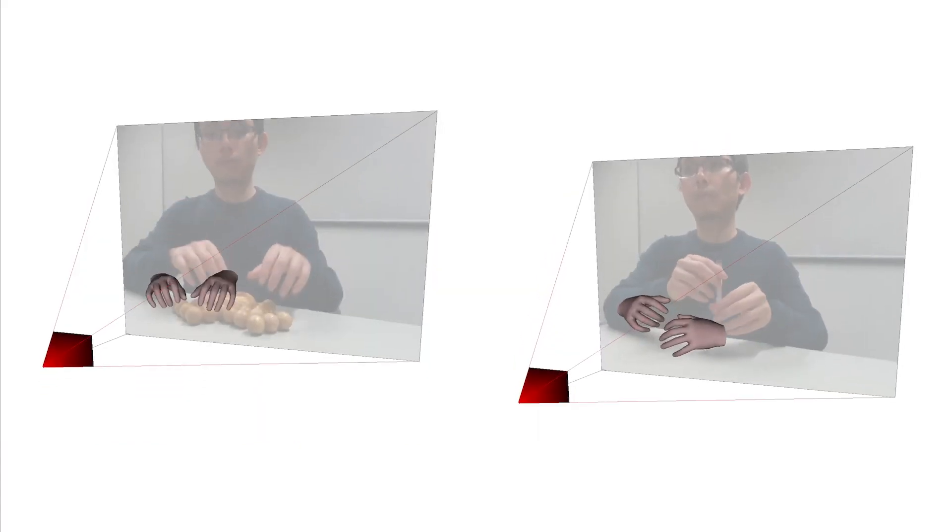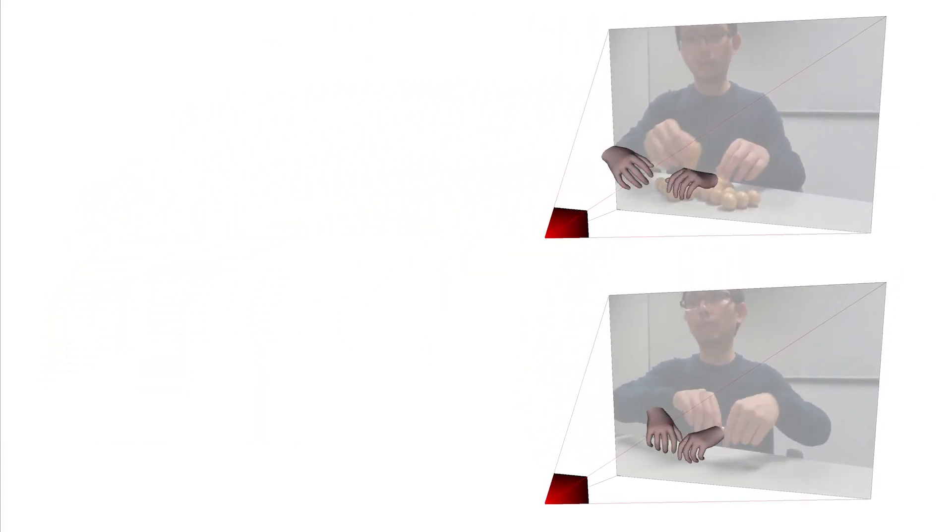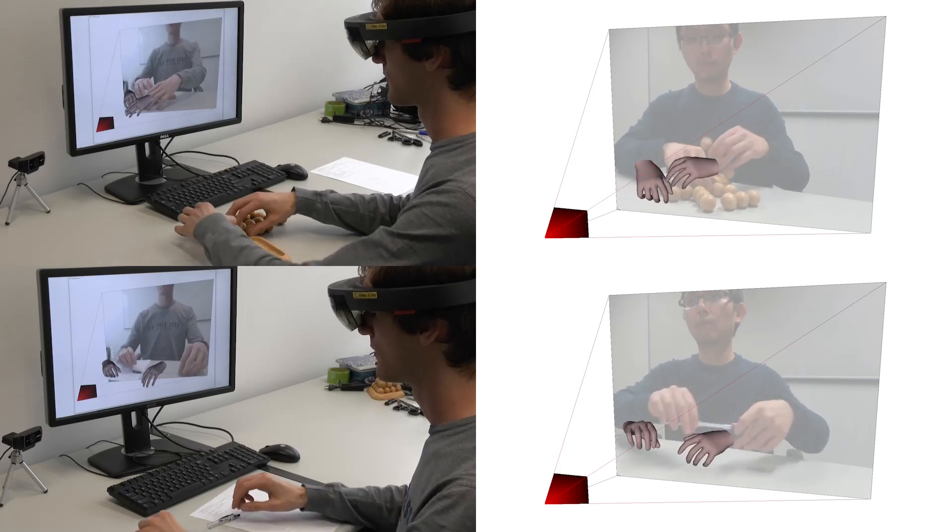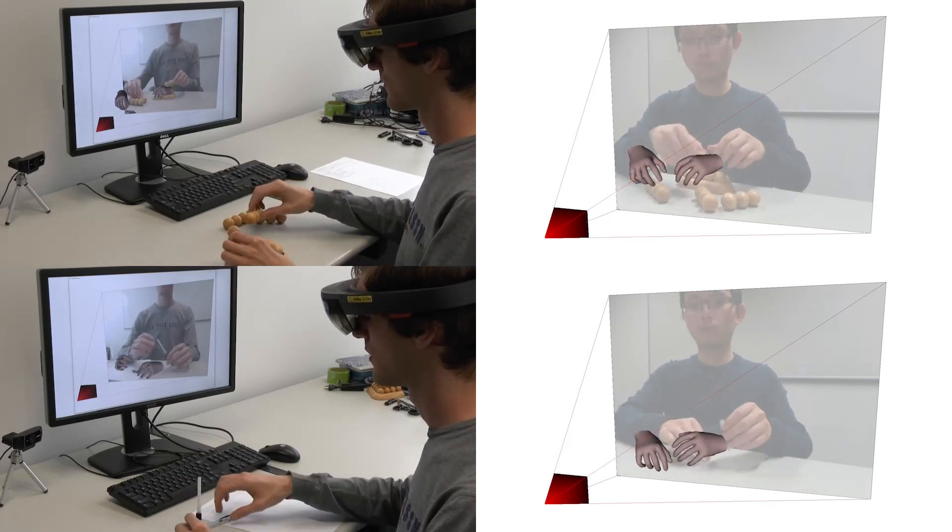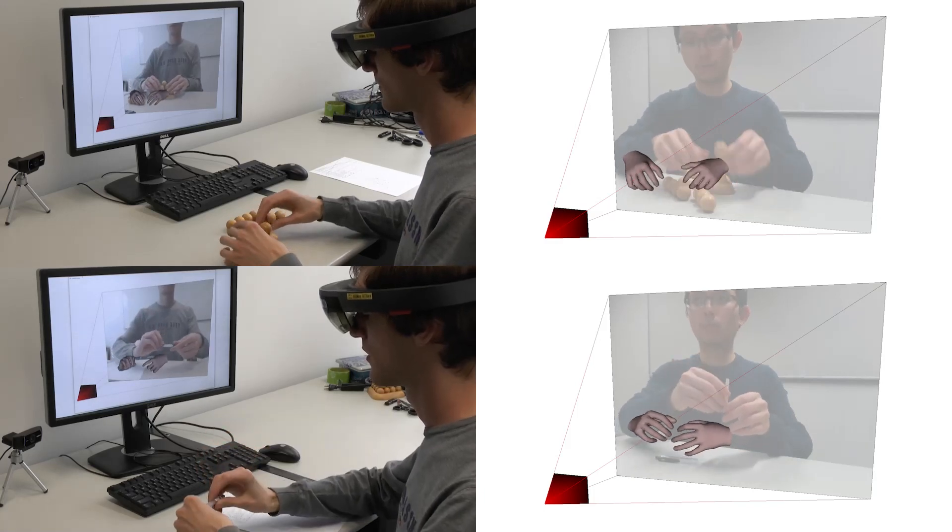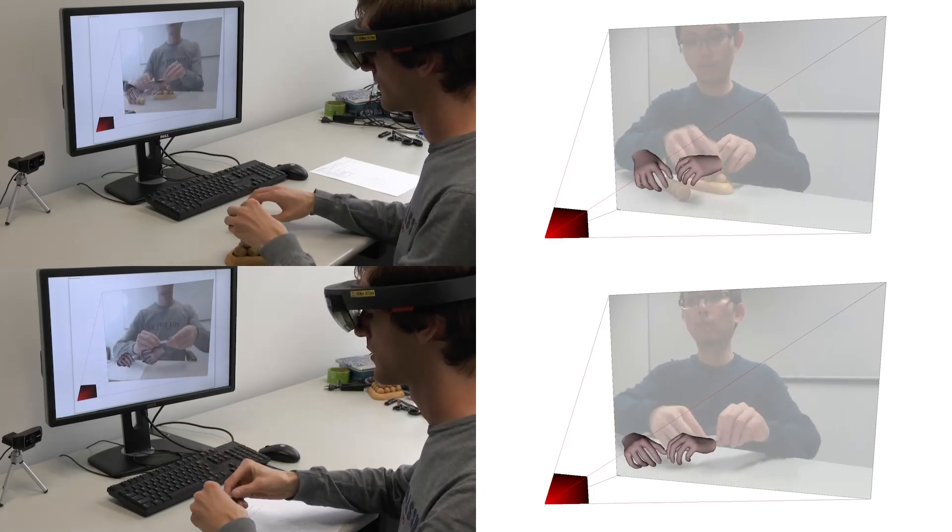Our method can track both hands interacting with objects in a complex manner. These recorded interactions can then be used in a VR environment to teach users how to perform the same tasks. This could for example be useful for the training of complex surgery.